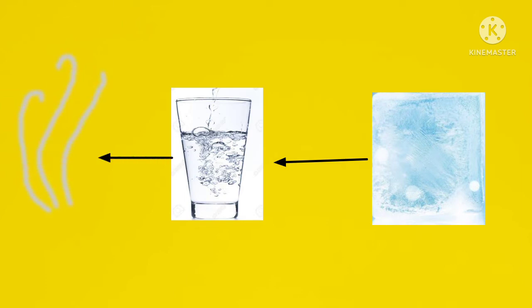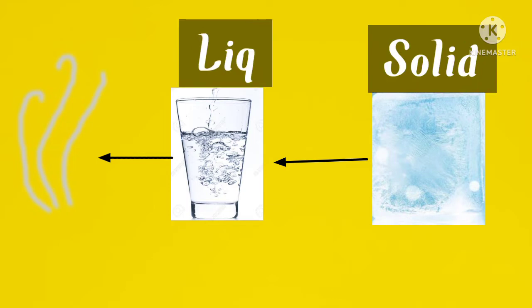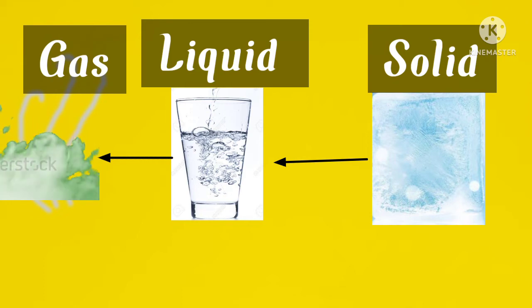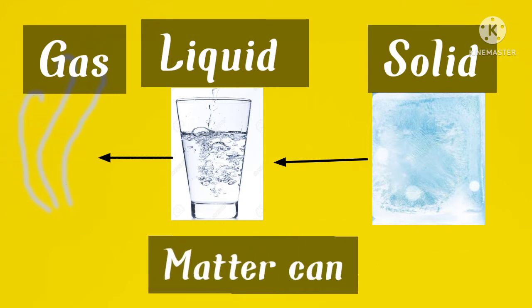So we started off as solid, that was ice, became liquid, that was water, became gas, that was those fumes going up. In all this process, temperature stopped two times and this shows us that matter can change its state.